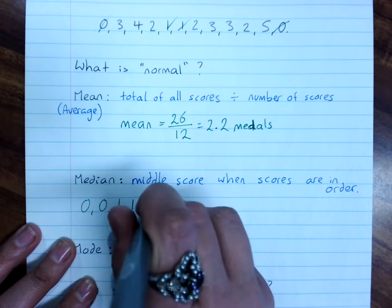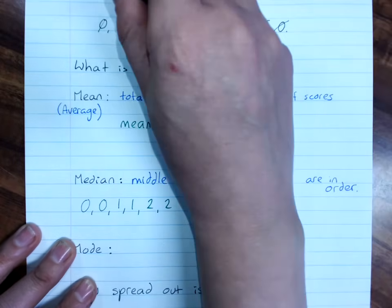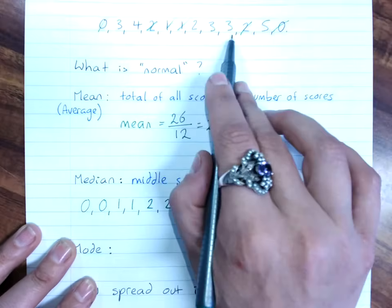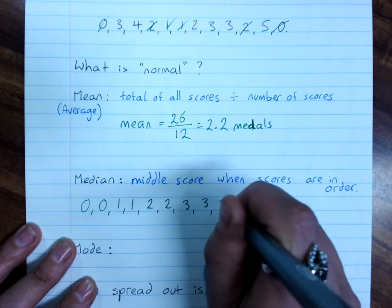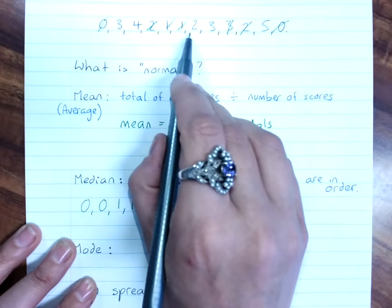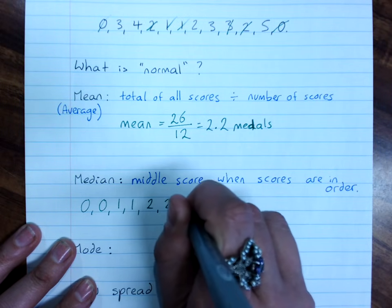So 2 people got 2, I think. Yes. 1, 2, 3 people got 3. Oh look, I missed a 2. Ah, got to be very, very careful.